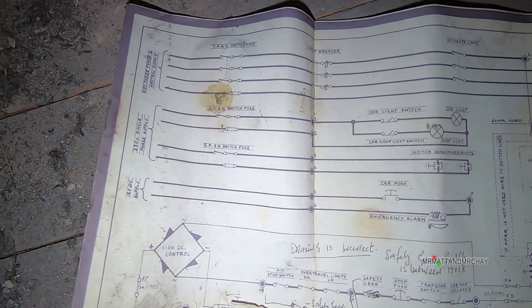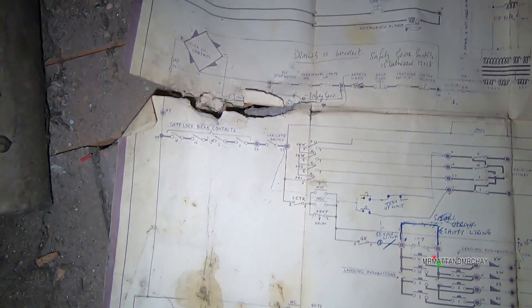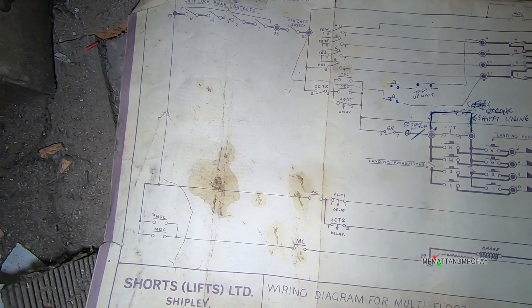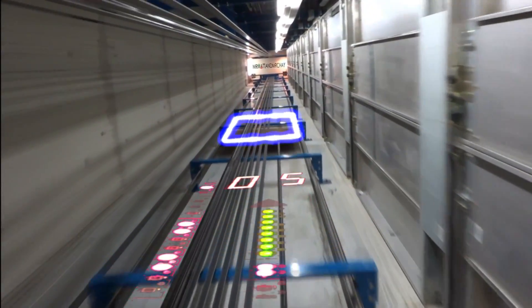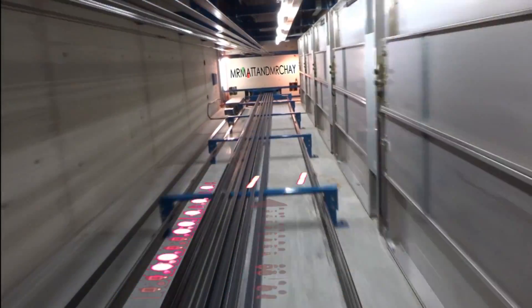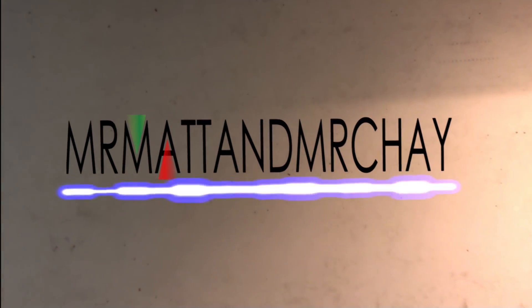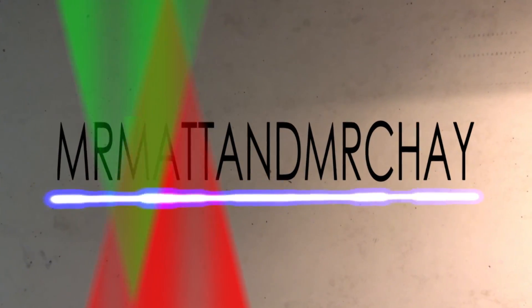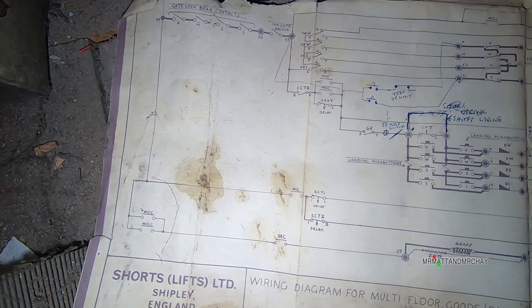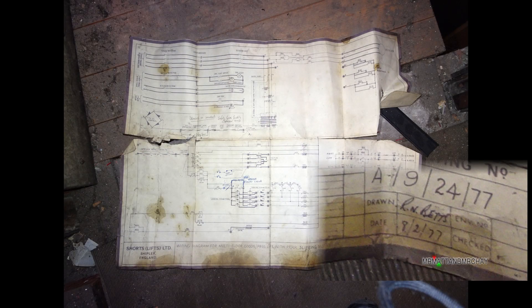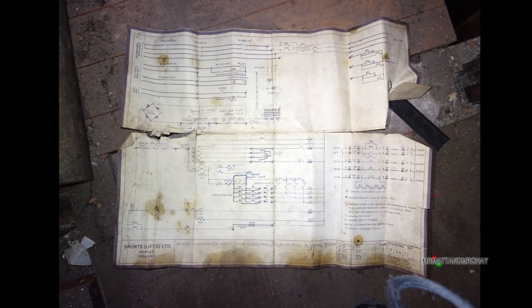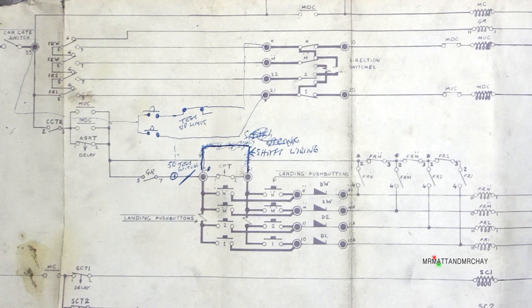This video is all about how the lift works, using the diagram that was left in the motor room. This diagram is dated 1977. As explained in a previous video, although the lift originally dates back to the 1920s, this diagram closely matches the lift.